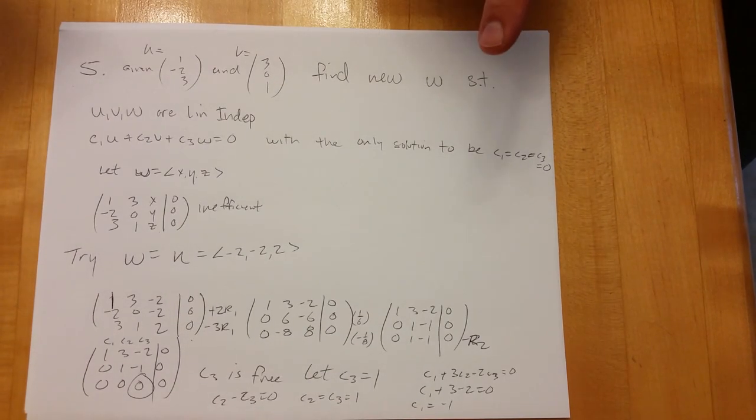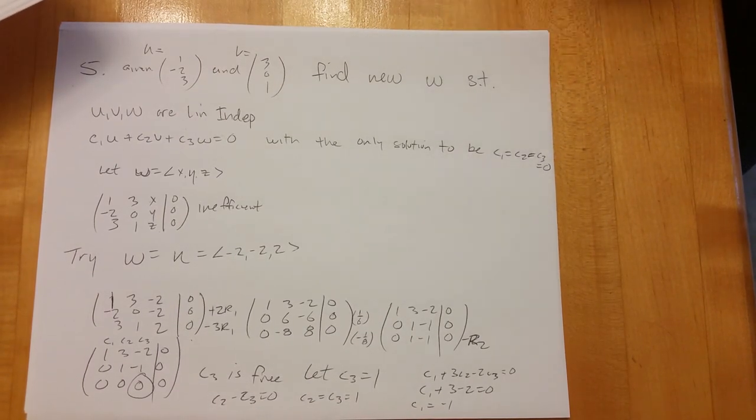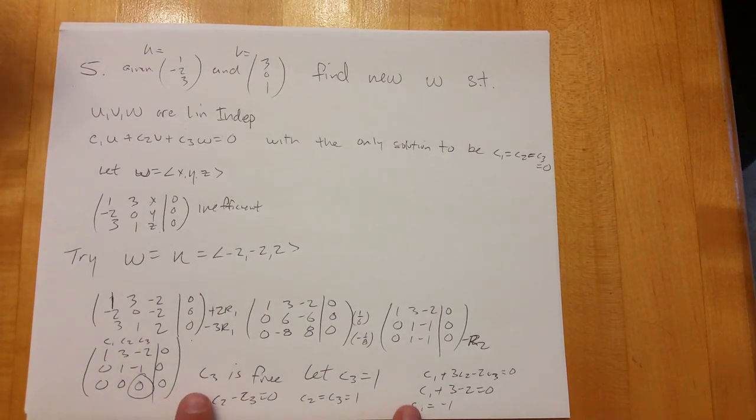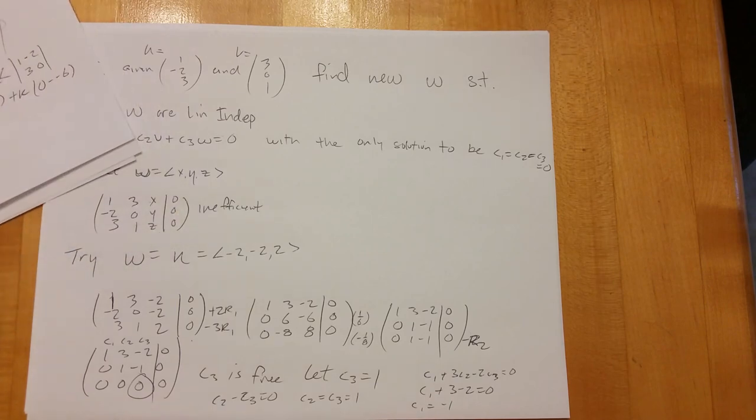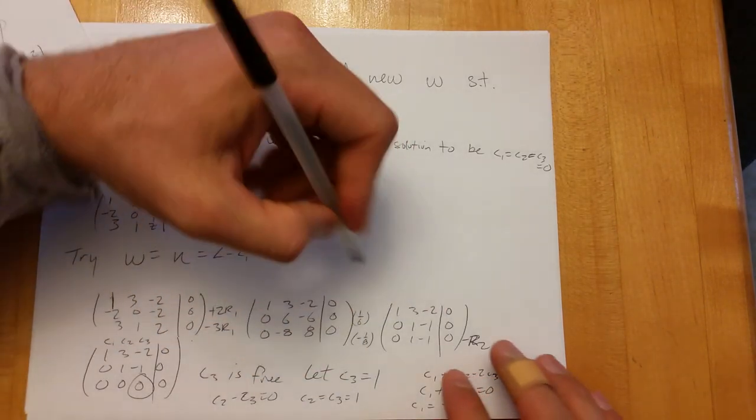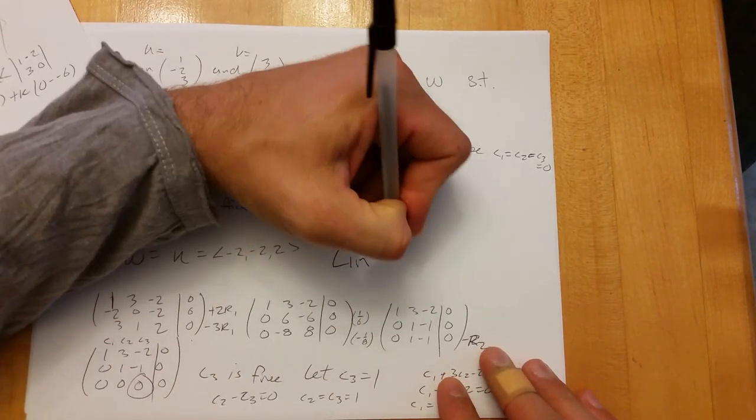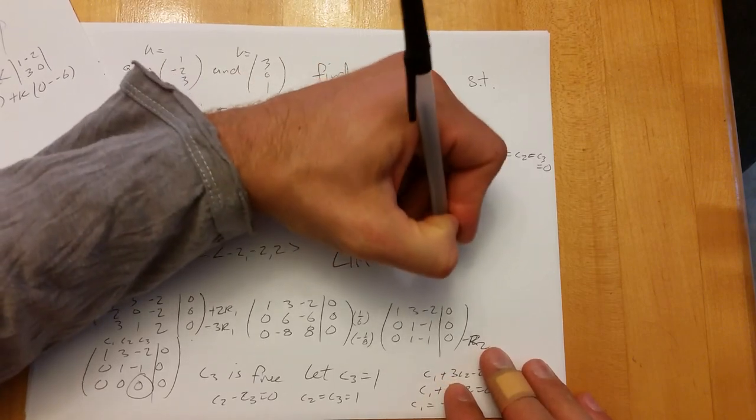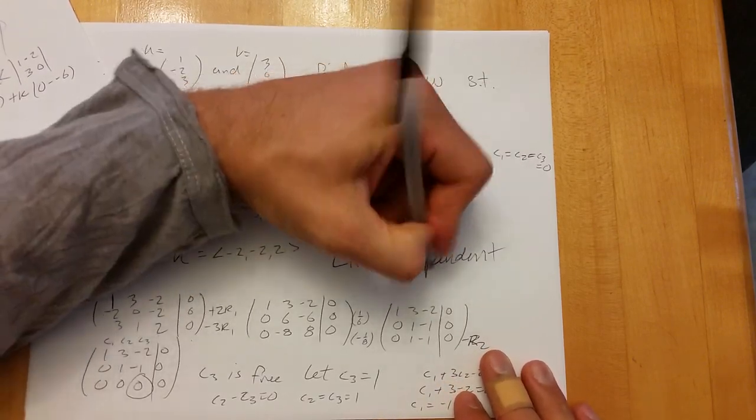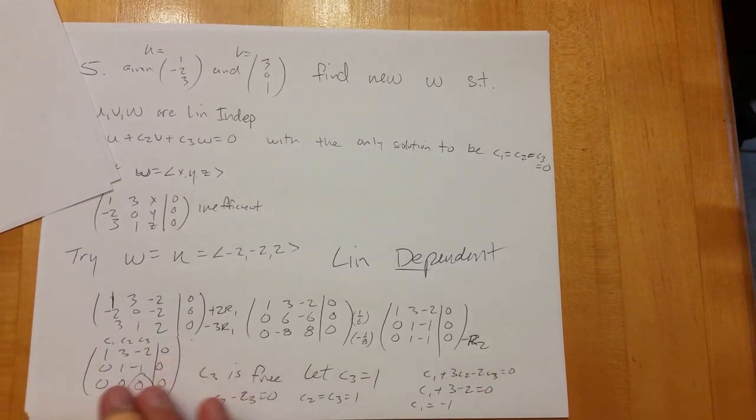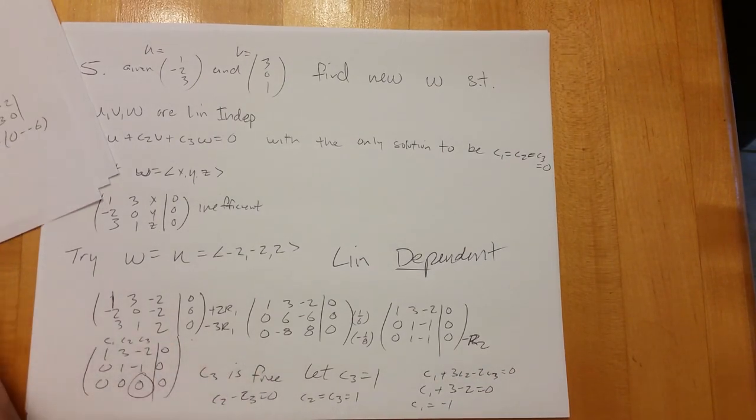So is that a right answer or the wrong answer? It's a wrong answer. We picked a vector that made this set dependent. So I'm totally okay with that, because then if I get to that point, I know I did something wrong. So this is linearly dependent. This is not the answer. It's not the correct answer for number five.